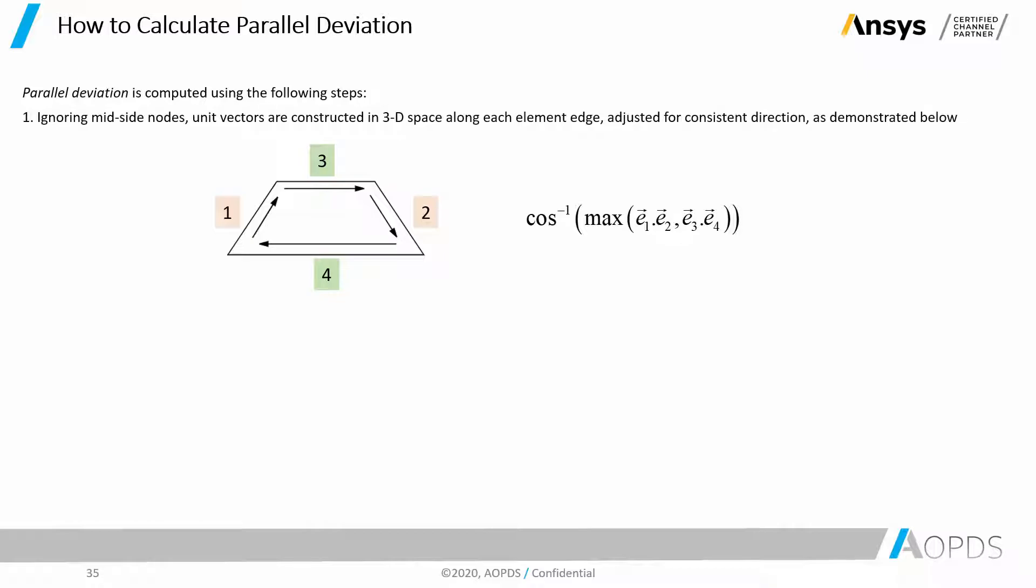Having the dot product of E1 and E2, and E3 and E4, comparing those two numbers with each other, we can have the maximum of them. Then we need to calculate what angle's cosine gives us that value. That number will give us the angle for parallel deviation.